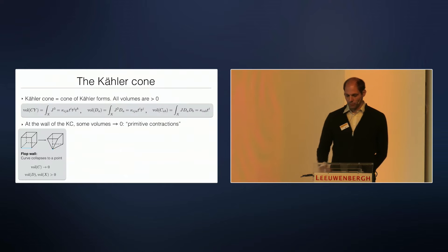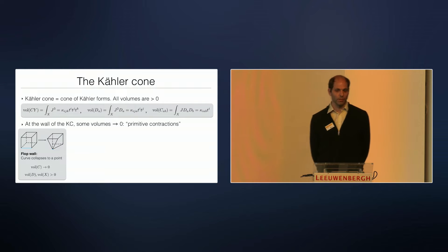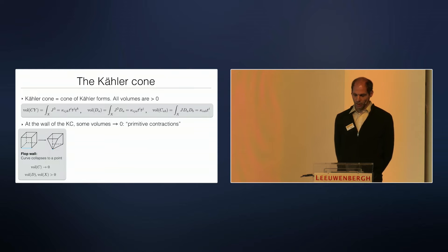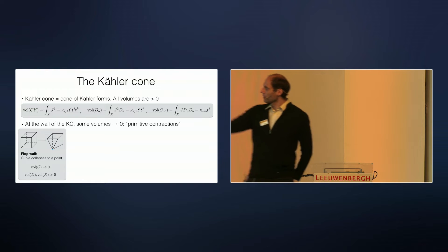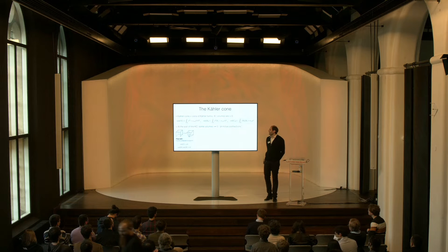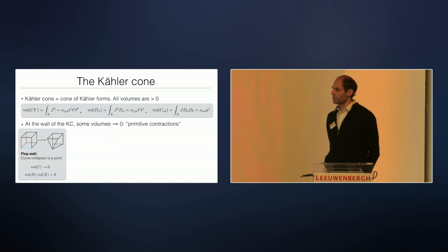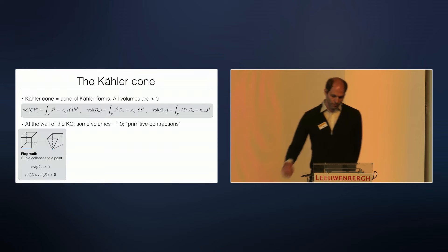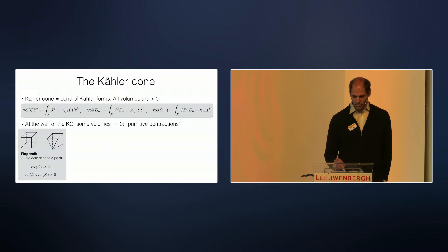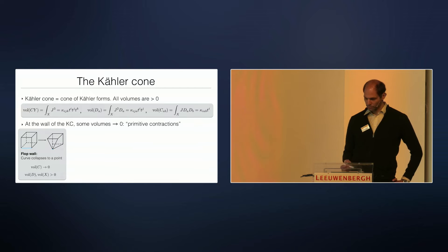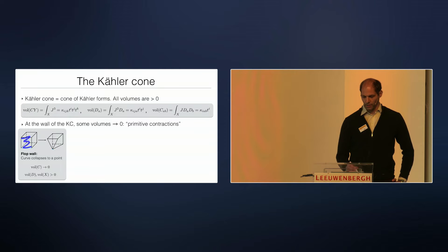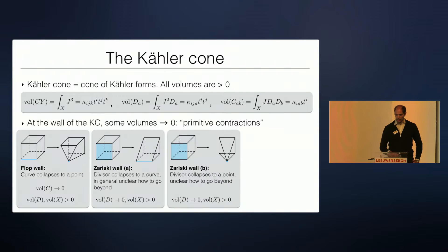Let's start with the types of Kähler cone walls. The Kähler cone is just the cone of Kähler forms, which essentially means that all volumes are positive: the volume of the Calabi-Yau, the volume of divisors, and the volume of curves all have to be positive. This means that if you reach the wall of the Kähler cone, some of these become zero. The simplest case is just a flop wall, where you collapse a curve to a point, but the divisor or the Calabi-Yau itself stays finite.